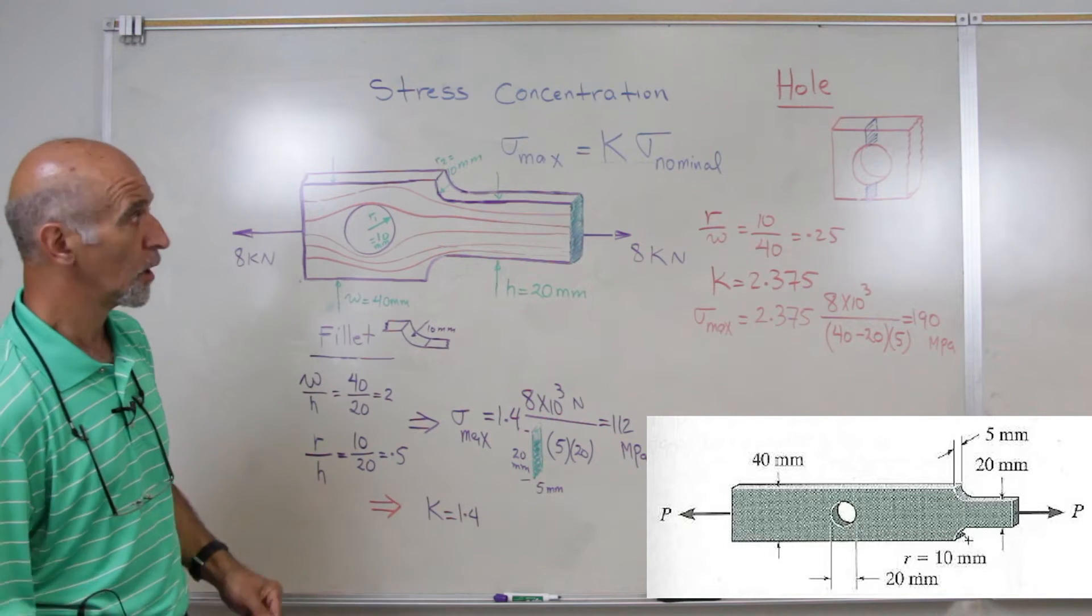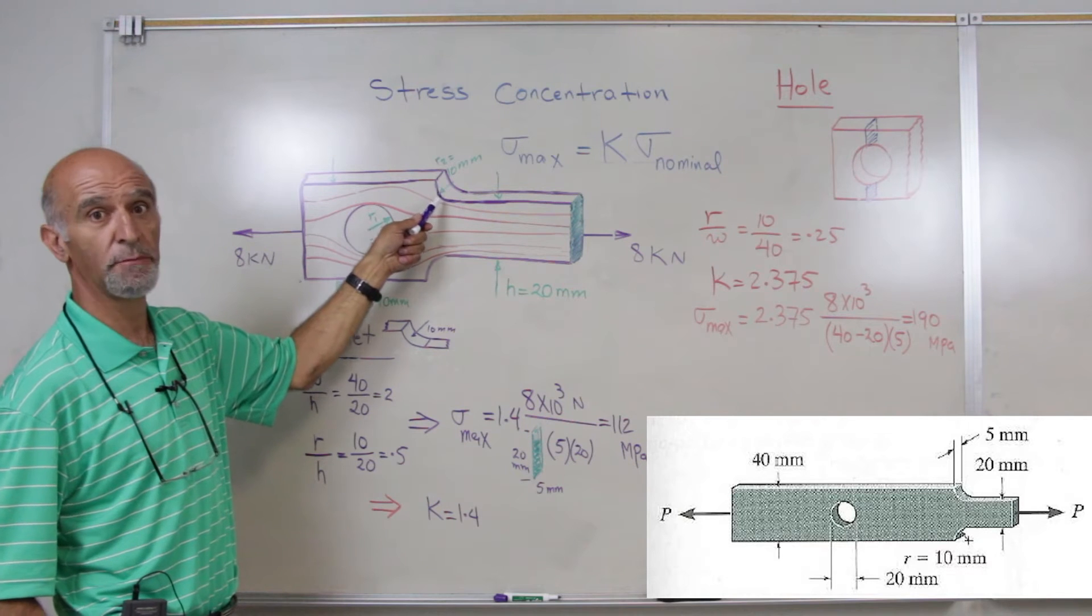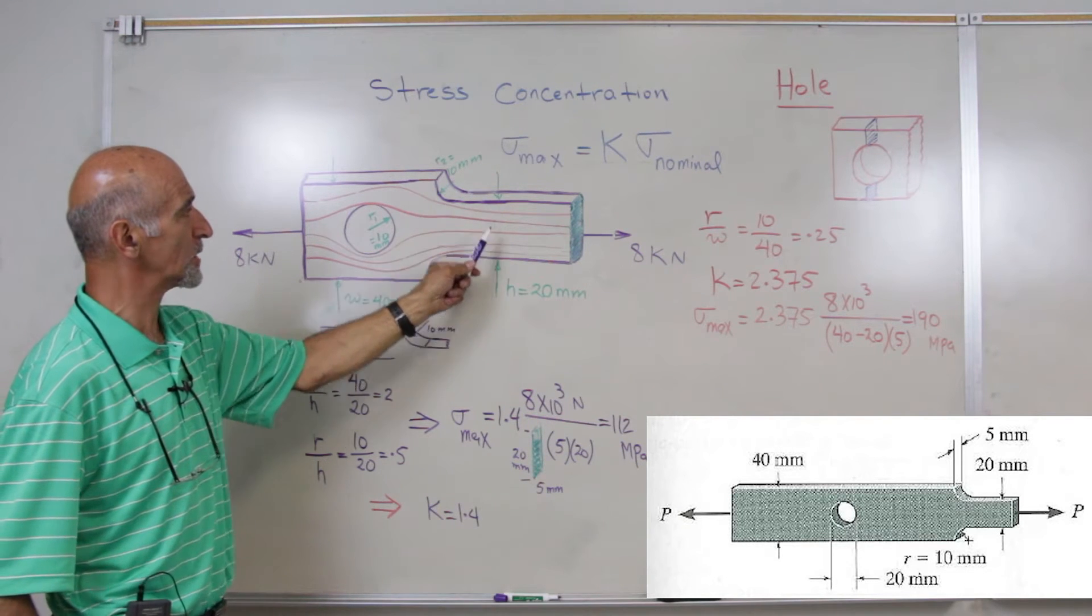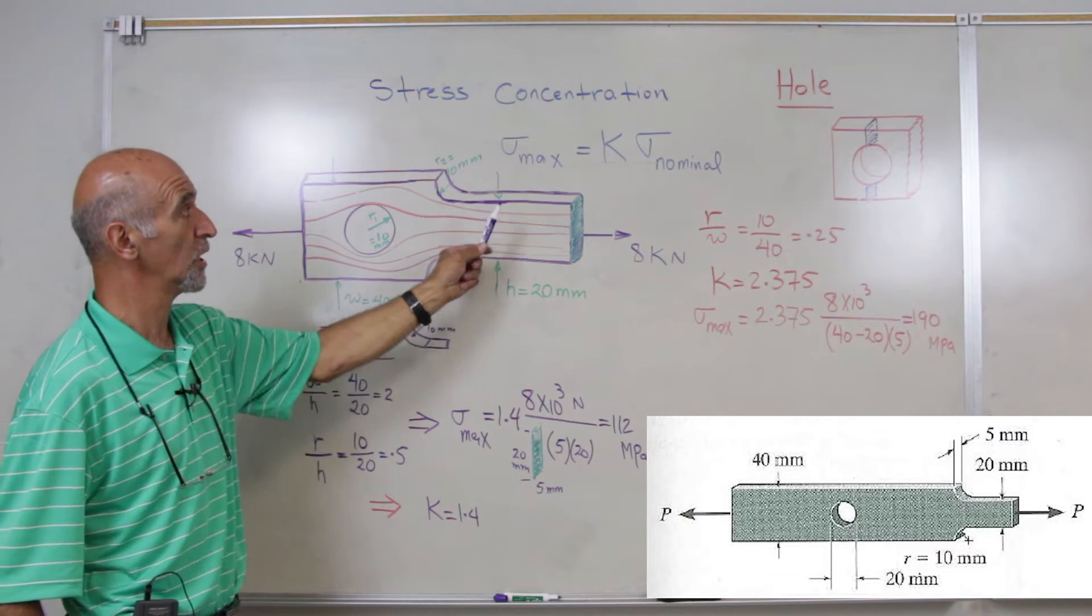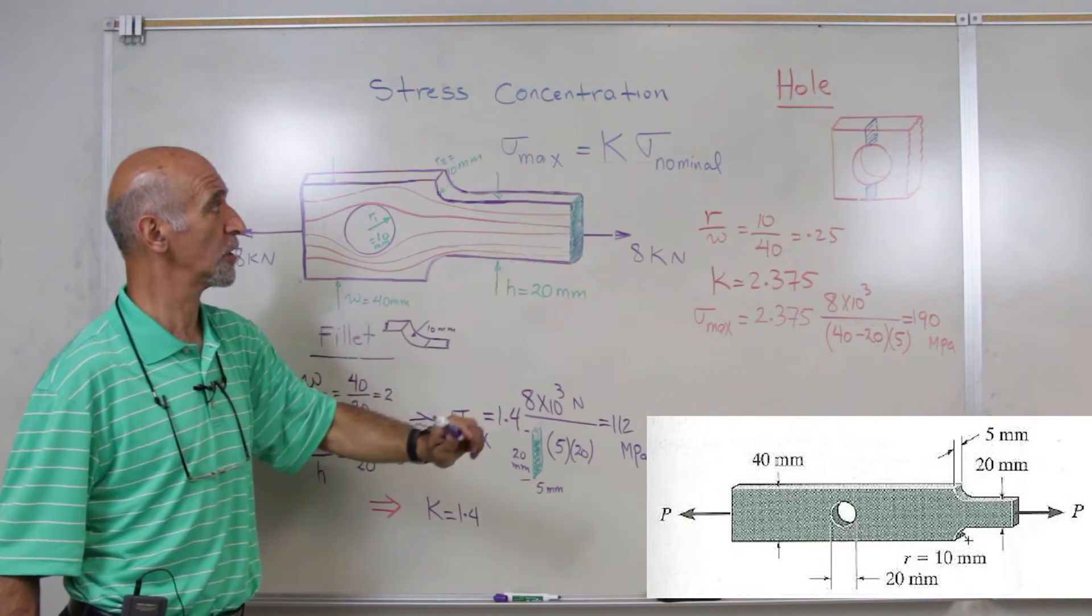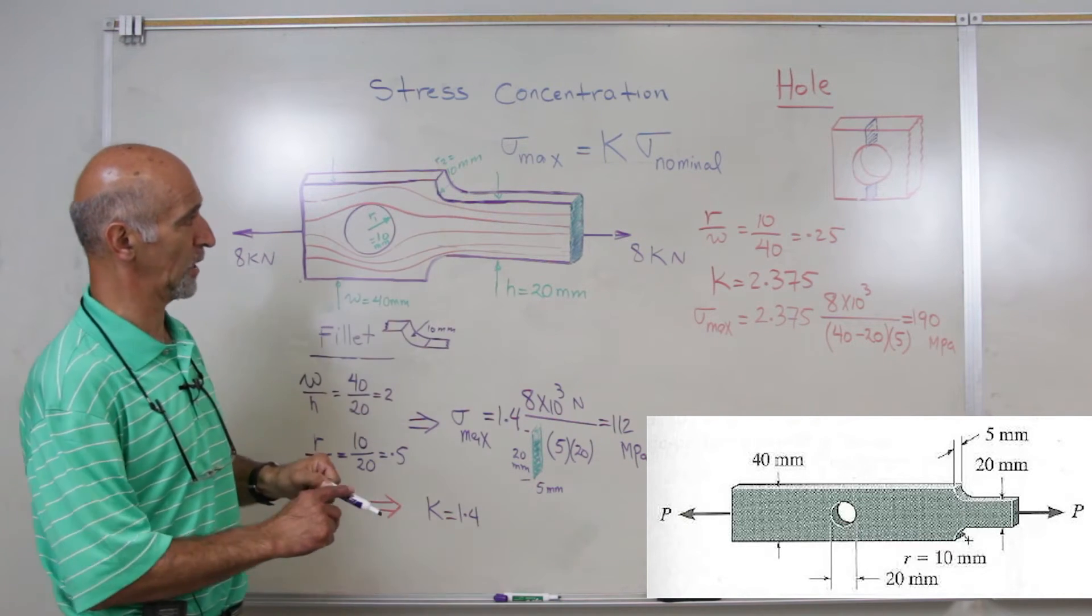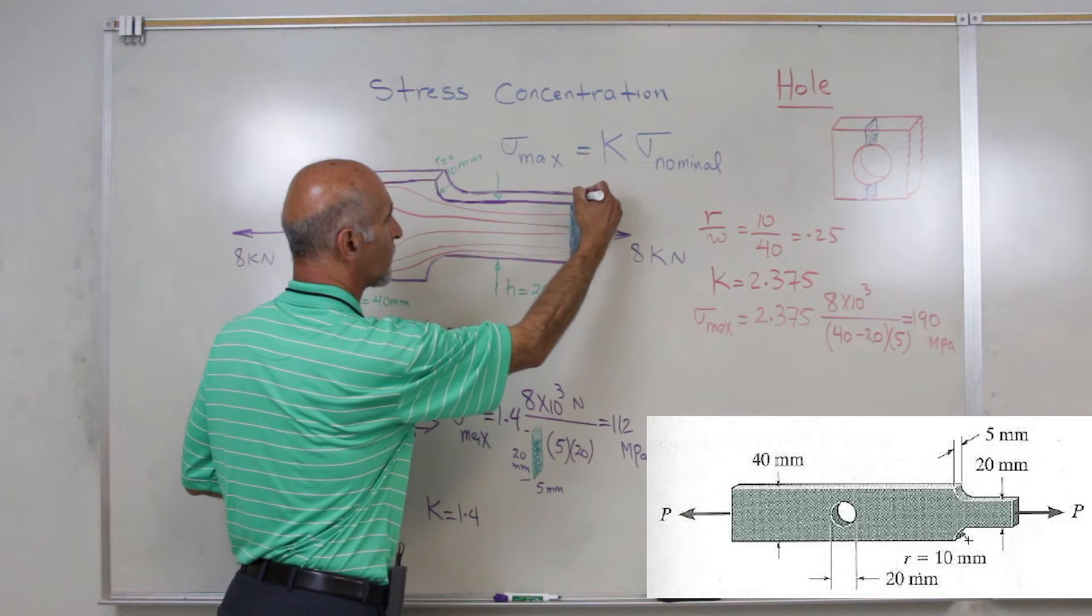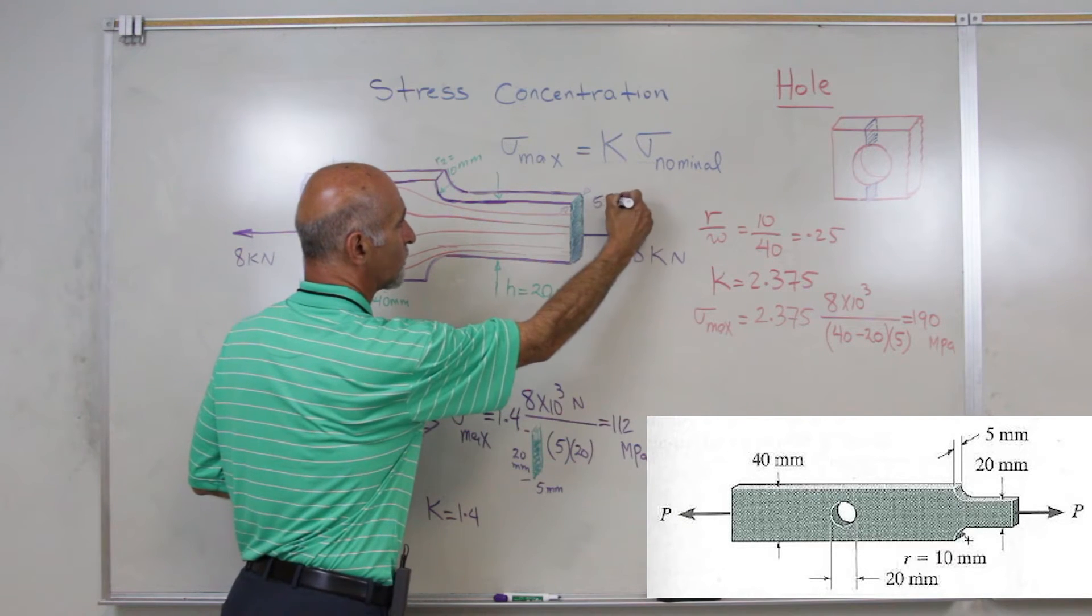One of them is due to the fillet, where the fillet size is 10 mm, as well as the size of the smallest area, which we will consider for the calculation of the nominal stress is 20 mm by 5 mm. As shown in the figure below, this is 5 mm thickness bar.